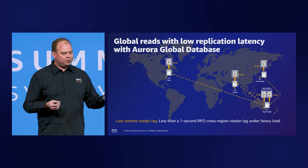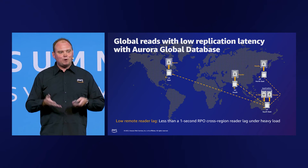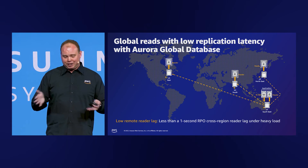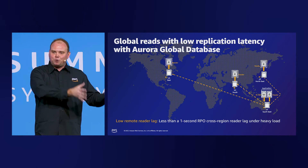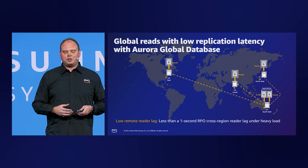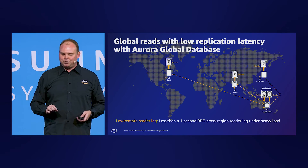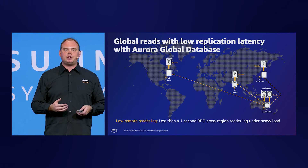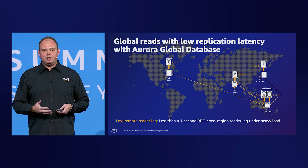What if there's more than two regions? Global databases let you scale your applications across the world by putting your database close to where your users are. Your applications enjoy quick data access regardless of the number and location of secondary regions, and typical cross-region replication latencies are below one second. You can achieve further scalability by creating up to 16 replicas in any region, and they will all stay continuously up-to-date.